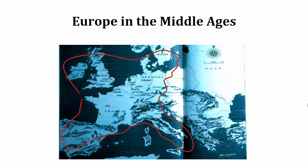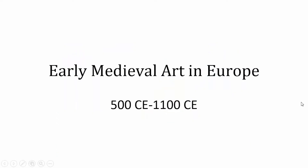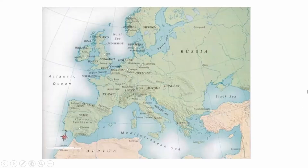You see before you an old map — you can see it says USSR on it, which shows how old it is. Circled in the red line is the area we're going to be concentrating on for the rest of the semester. The early medieval period I'm going to lecture on today goes from 500 CE to 1100 CE, encompassing early medieval art, early Christian art, the Carolingian era under Charlemagne, and also the Ottonian era.